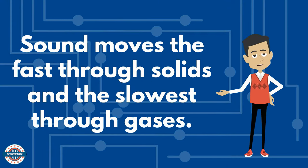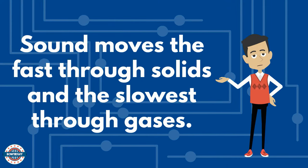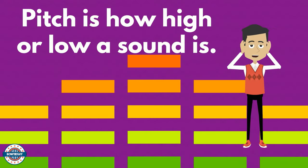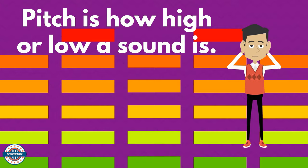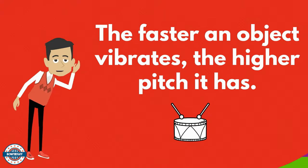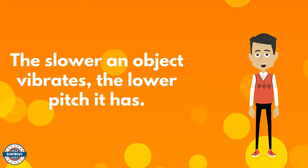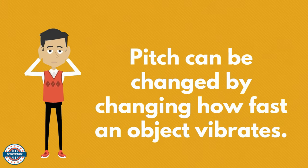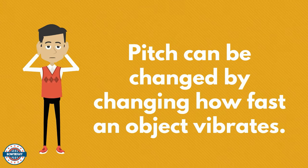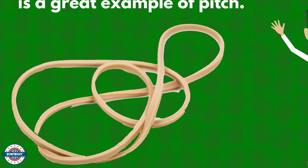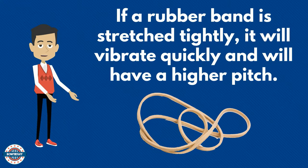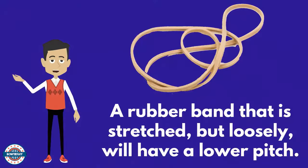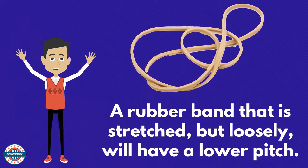Sound moves the fastest through solids and the slowest through gases. If an object makes a sound, it has pitch. Pitch is how high or low a sound is. The faster an object vibrates, the higher the pitch; the slower an object vibrates, the lower the pitch. Pitch can be changed by changing how fast an object vibrates. A rubber band is a great example: if stretched tightly, it will vibrate quickly and have a higher pitch, while a loosely stretched rubber band will have a lower pitch.